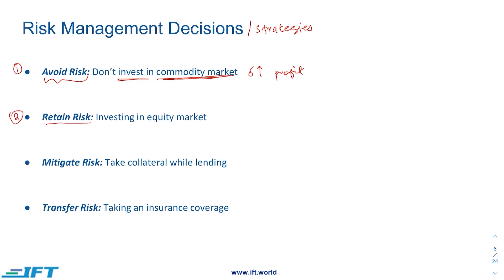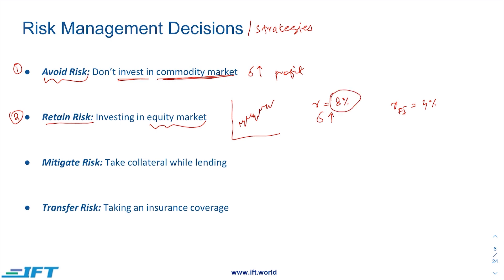The second strategy is to retain your risk. We know there is risk when we invest in the equity market due to volatility, but as a corporate your target may be to achieve a minimum return of eight percent. If you avoid the equity market and invest in fixed income, you may get only four percent, which doesn't help you attain your financial objectives. So you decide to retain the risk that comes with the equity market in exchange for higher returns.